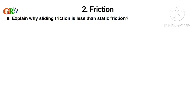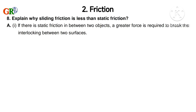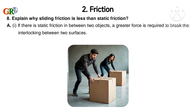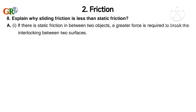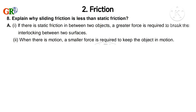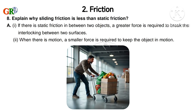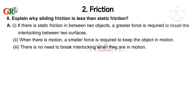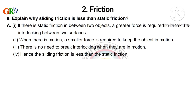Eighth question: Explain why sliding friction is less than static friction. If there is static friction between two objects, a greater force is required to break the interlocking between the two surfaces. But when there is motion, a smaller force is required to keep the object in motion — there is no need to break interlocking when they are already in motion. Hence, sliding friction is less than static friction.